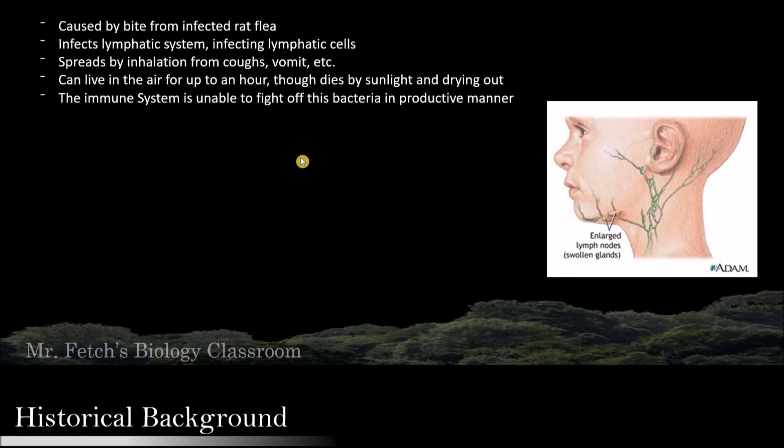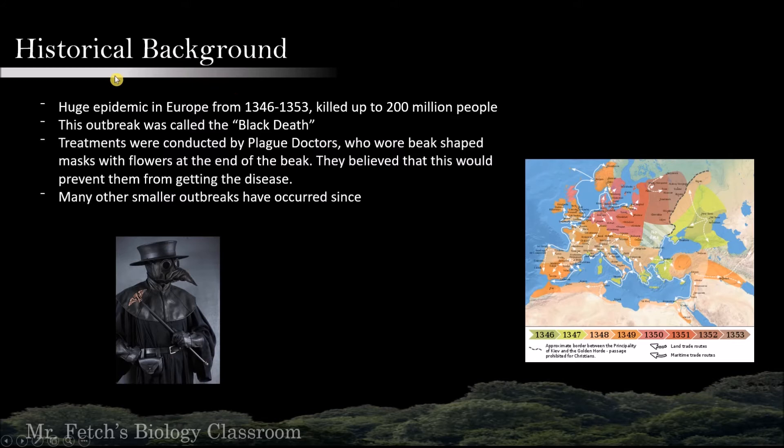There was a huge epidemic in Europe from 1346 to 1353, killing up to 20 million people. This outbreak was called the Black Death. Treatments were conducted by plague doctors who wore beak masks with flowers at the end of the beak, which supposedly prevented them from getting the disease, though this proved pretty ineffective. Many other smaller outbreaks have occurred since.